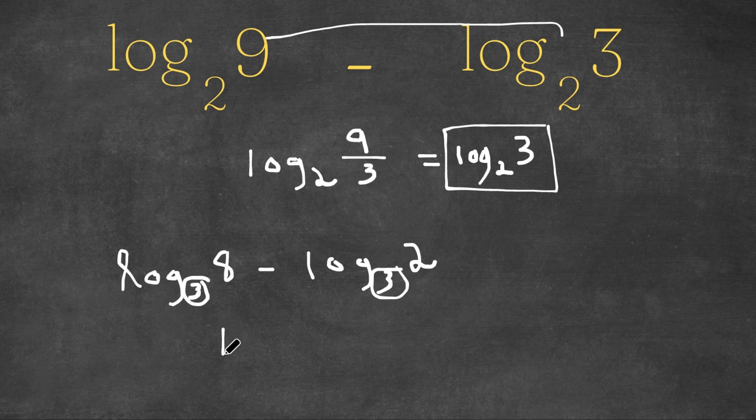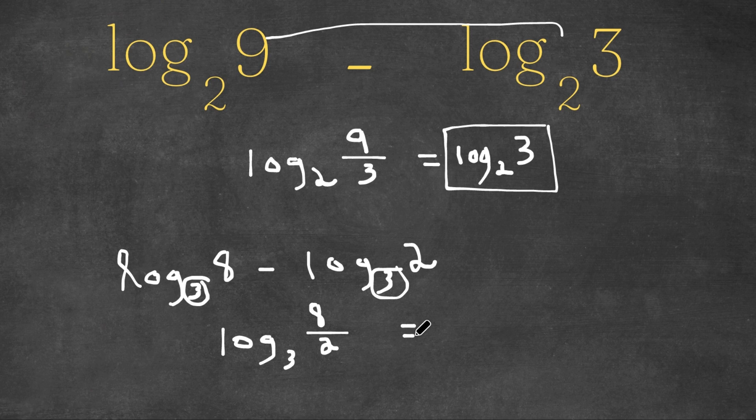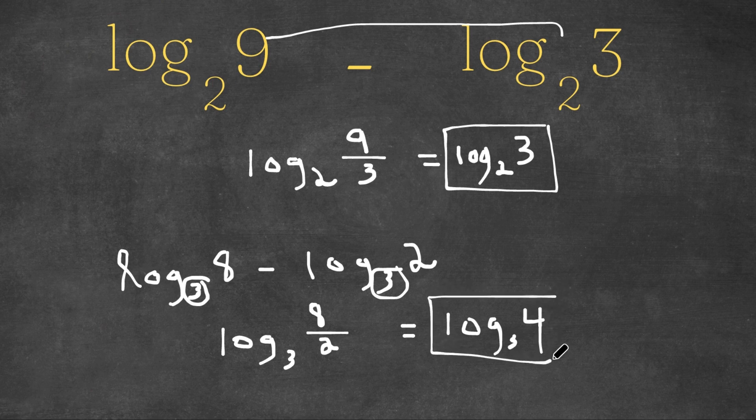So then we write log base 3. The base stays the same. This number is our numerator. This number is our denominator. And 8 over 2, as we all know, is 4. So this is log base 3 of 4, and this is our answer to this problem.